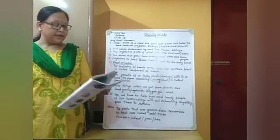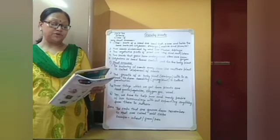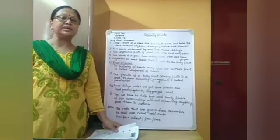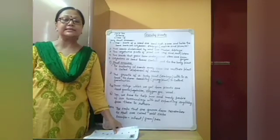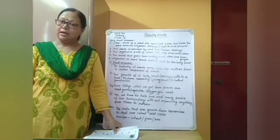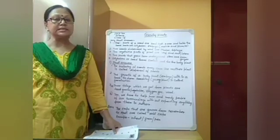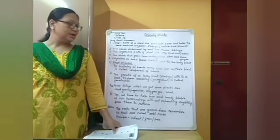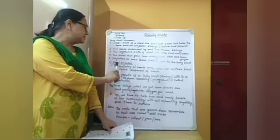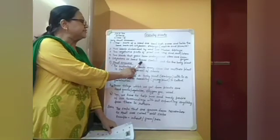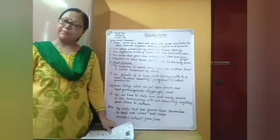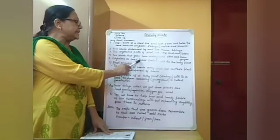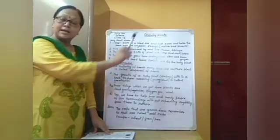Next question: which part of the seed contains food for the baby plant? In the germination or seedling stage, the two parts called cotyledons provide food to the growing plant. The answer is: cotyledons or seed leaves contain food for the baby plant.